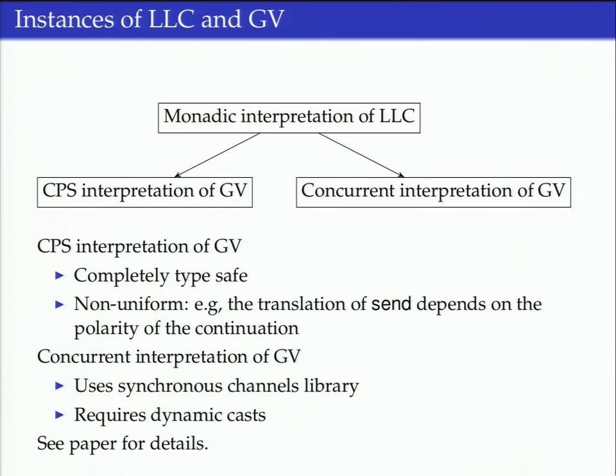Now finally, I'm going to tell you what interpretations we've implemented. We gave a monadic interpretation of linear lambda calculus, instantiated in two different ways in two different monads. First one: CPS, which is nice because it's completely type safe. It in some sense shows that there isn't actually any concurrency in this very limited language on its own. You can simulate it all by sequential stuff, but it still could be useful for encoding protocols in a sequential system. There's some interesting technicalities in the translation because it's non-uniform. We also have a concurrent implementation built on the synchronous channels library, but that does require some dynamic casts under the hood. But once you've done that, if that's correct, that's just your trusted kernel and all your code on top will work nicely.